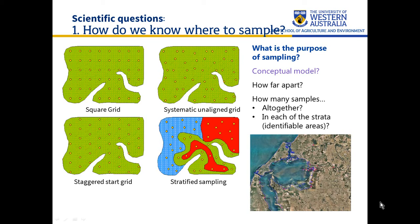Some of that relates to where we might expect to find contamination or where we'd expect to find environmental gradients across the site. We may have some information, for example different soil mapping units, and in that case we can do what we call stratified sampling — where we take different categories of samples in different map units at our site.